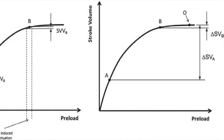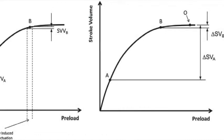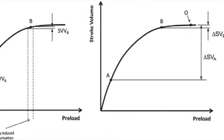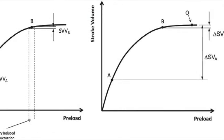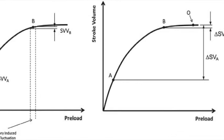However, with the next positive pressure breath, there will be another transient increase in blood flow to the left atrium, and the cycle will repeat. Why is this useful to measure volume status?